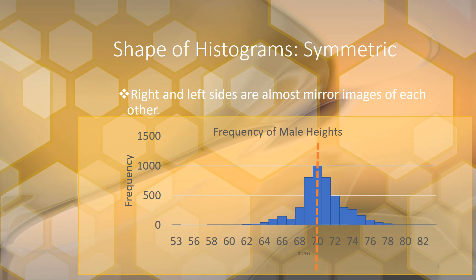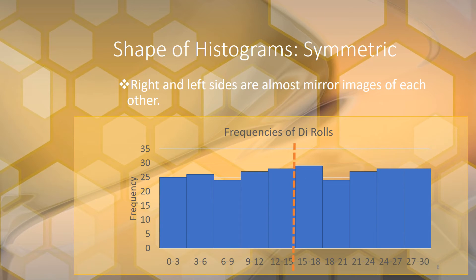Another term you need to know is symmetric. Symmetric means the histogram has mirror images on each side — the right side is a mirror image of the left side. If you fold it over on the dotted line, the histogram would roughly line up; they don't have to be perfect, but they're about mirror images of each other. The bell-shaped histogram is one example of a symmetric histogram.